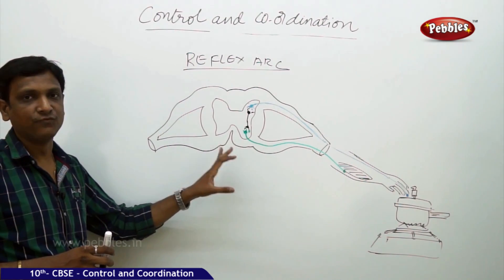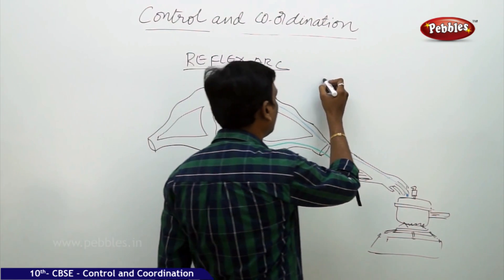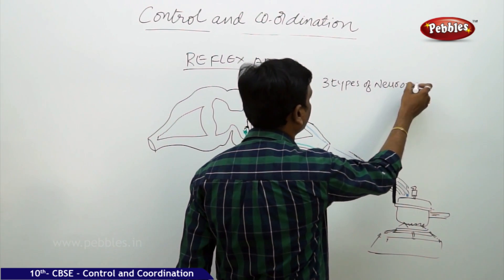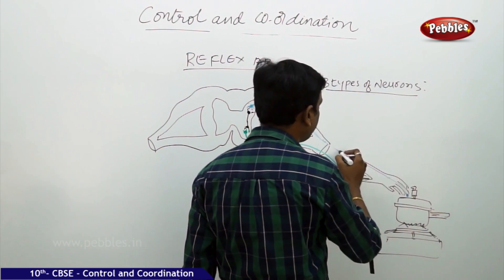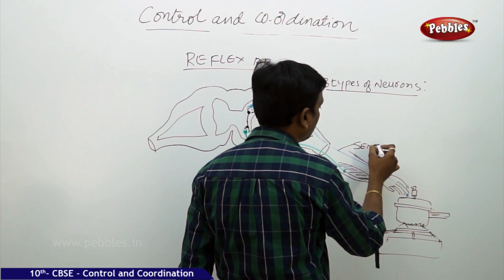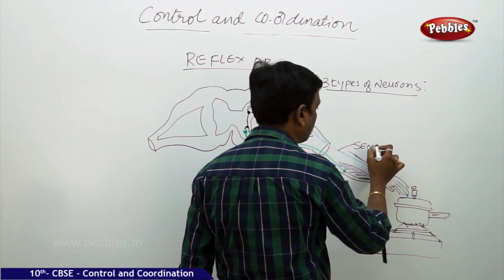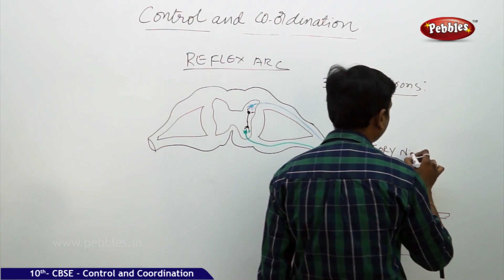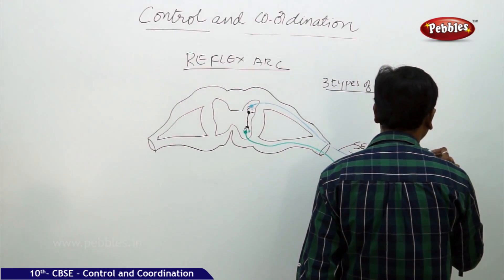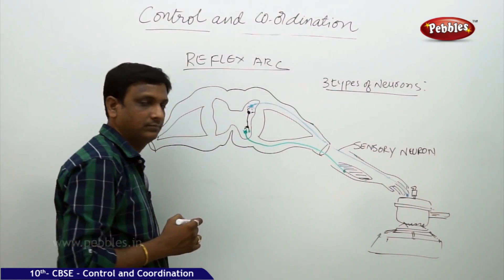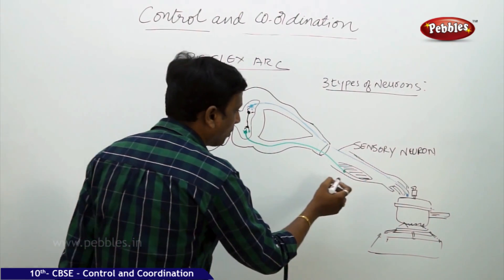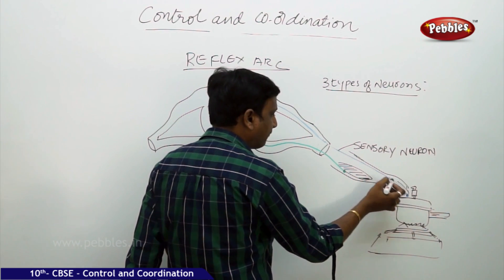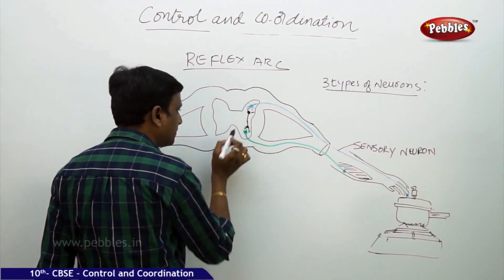Let us see what are the various parts involved in the execution of a reflex arc. The first type is the sensory neuron. The sensory neuron carries the information — here, the fingers touch a hot object, and that hot information is carried by the sensory neurons to this particular part of the spinal cord.